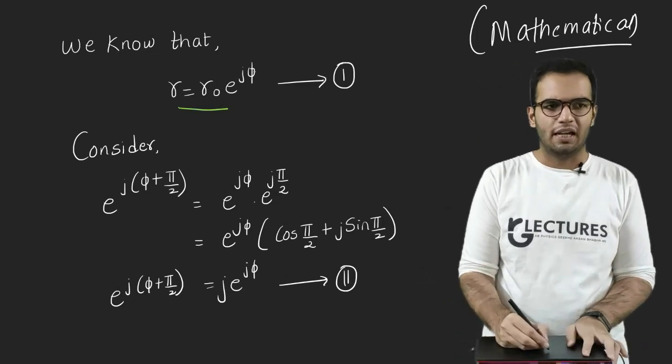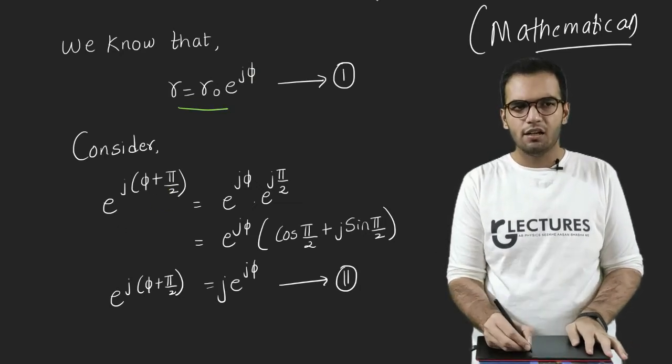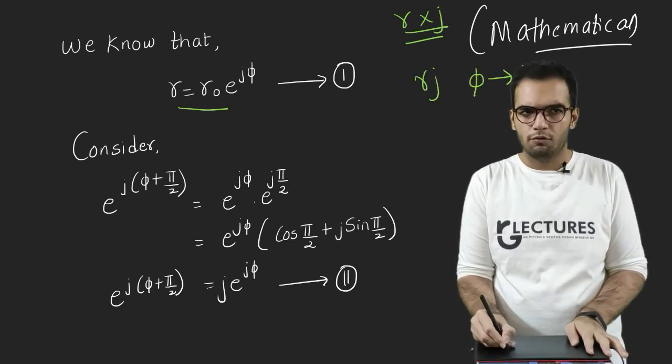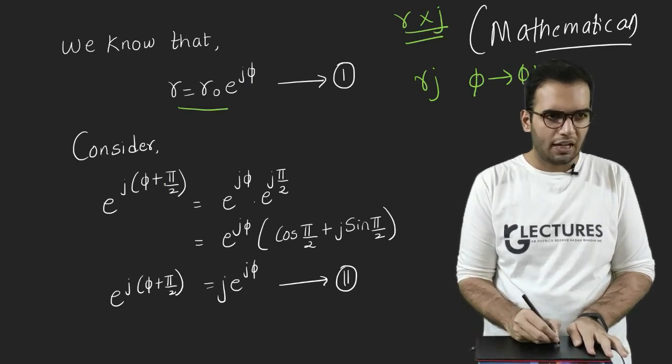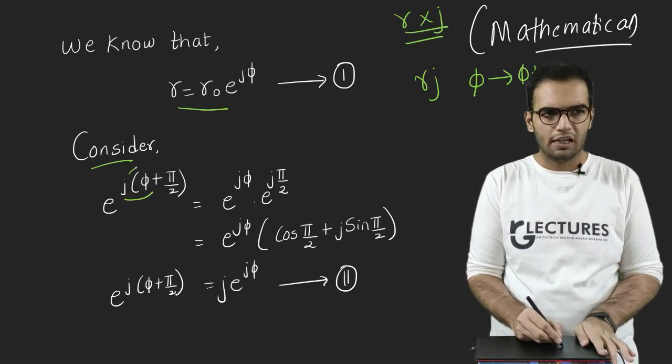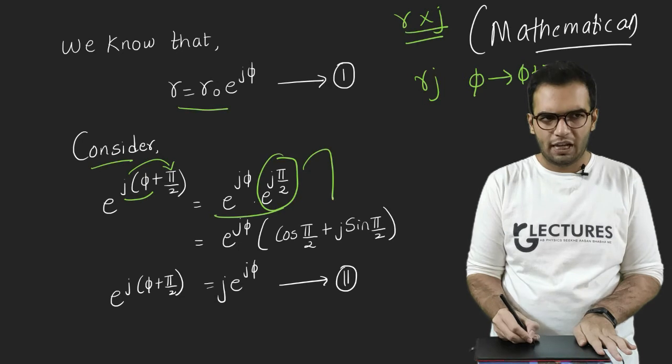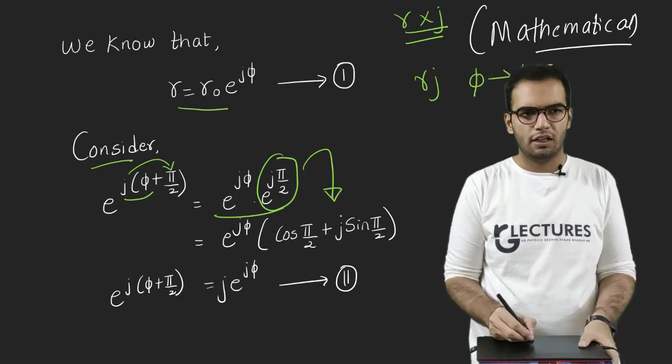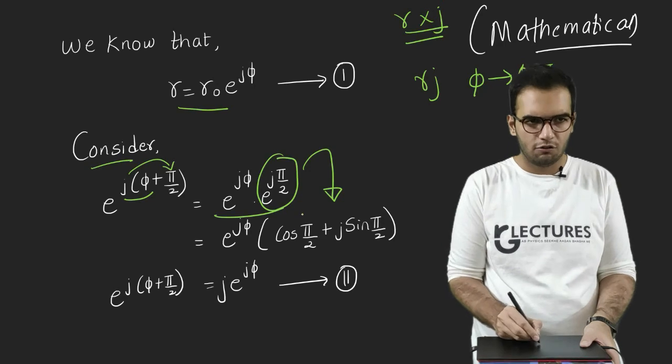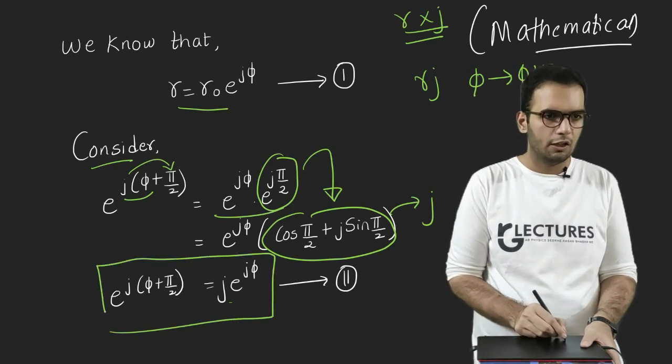So let us increase the phase by 90 degree, because I know I will get a multiplication of J. Because if I increase the angle by 90 degree, the phasor should get multiplied by J, or vice versa. If I multiply a phasor by J, I will get the angle increased by 90. So I have increased this φ by 90 here. Consider this term. So what I will get? I will get e raised to J φ multiplied by e raised to J 90. So I will get both of these terms. Now apply Euler's theorem on this term. So what I will get is this equation. Cos of 90 plus J sine of 90. What is this term? Cos of 90 is 0, and what is sine of 90? Sine of 90 is 1. So I will just get a J from here. This just gives me J.